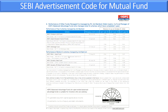The riskometer — whether the scheme falls under very high, high, or moderate risk — must be published in every advertisement. The scheme objective must also be stated: for example, 'HDFC Balance Advantage Fund — an open-ended balance advantage fund — is suitable for investors seeking long-term capital appreciation and income through a mix of equity and debt instruments.' Every advertisement requires this much clarity as per the advertisement code for mutual funds prescribed by SEBI.